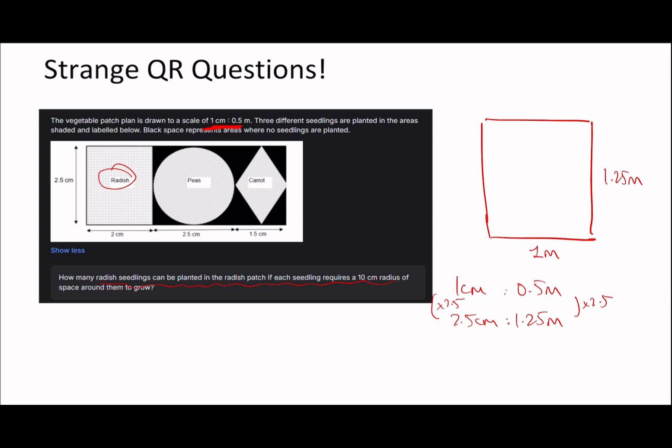Each seedling requires a 10cm radius of space to grow around it. So if you think about it, it's like a circle that's taking up 10cm in either direction. We have to consider it on a horizontal and a vertical plane. If the radius here is 10cm, that means the diameter is 20cm. So in this 1m space, you can fit 5 across here. And it also means if you only have 1.25m up here and the vertical height is 20cm, then that means in total you can fit 1.25m divided by 0.2m, which is 6.25.